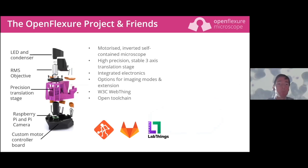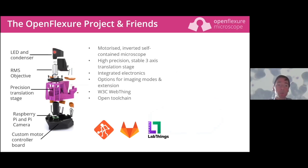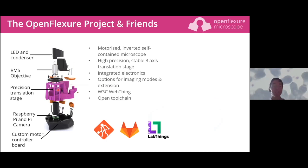So what does the OpenFlexure microscope look like? It's got most parts you'd expect in a typical lab microscope. There's a condenser at the top with an LED illumination source, a condenser lens, a microscope objective, a tube lens in the middle, and a precision translation stage for X, Y, and Z movement. At the bottom there's a Raspberry Pi, a camera, and a motor board so everything can be automated. It's a fully motorized inverted microscope, self-contained with all electronics inside the box.